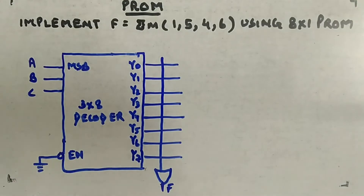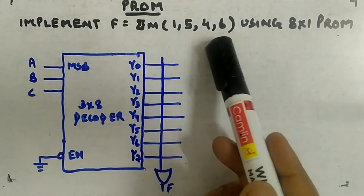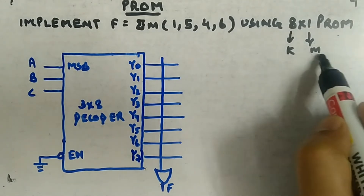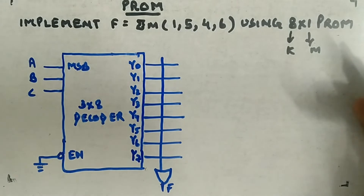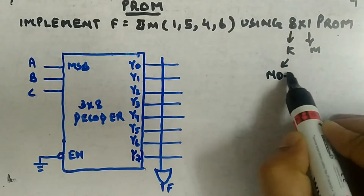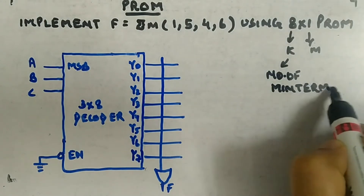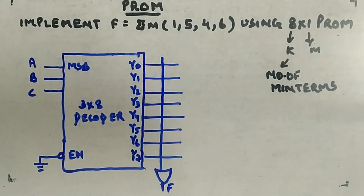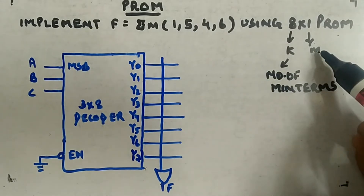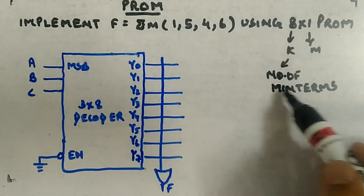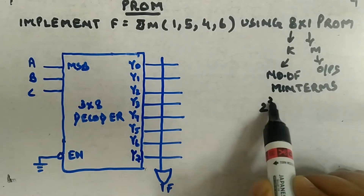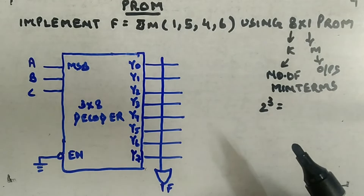Let's see an example: implement a function whose minterms are {1, 5, 4, 6} using an 8×1 PROM. From 8×1, K=8 is the number of minterms and M=1 is the number of outputs. Since we have 8 minterms, that is 2^3, so we need 3 variables to generate 8 minterms. This means we have a 2^3 × 1 PROM.